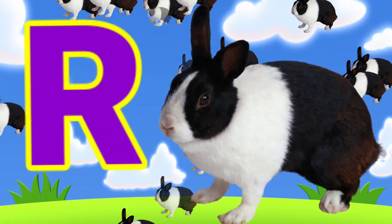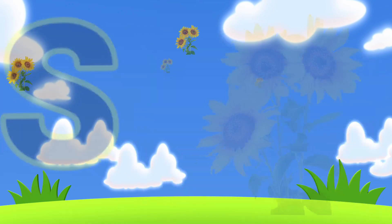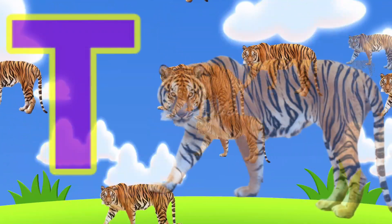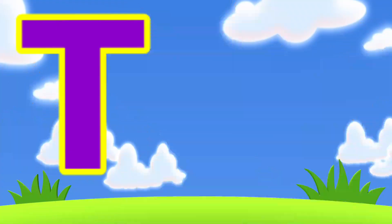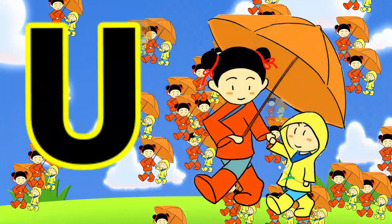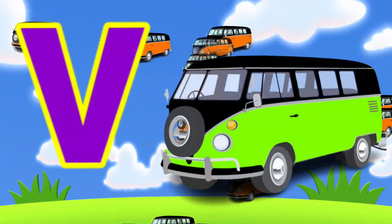R for rabbit, S for sunflower, E for tiger, U for umbrella, B for van.